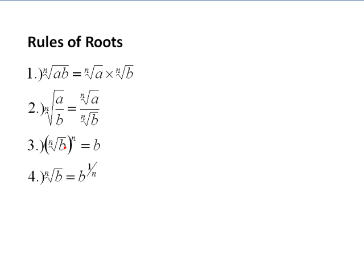The nth root of a number raised to the nth is actually the number. In other words, if this were the third root of B to the third, the thirds would cancel each other out and it would be simply B.